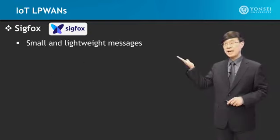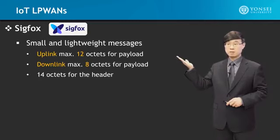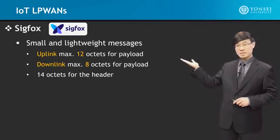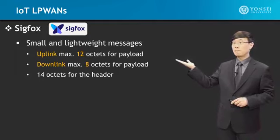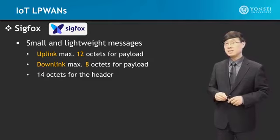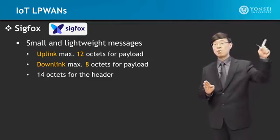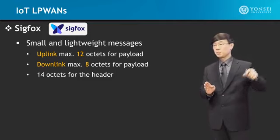Small and lightweight messages are transferred over SIGFOX networks. The uplink maximum is 12 octets for payload — that's 12 bytes — where uplink means that the sensor nodes are sending data to the SIGFOX base station access point.